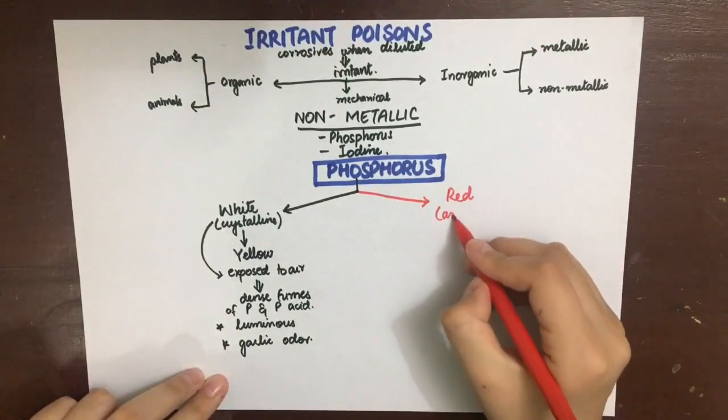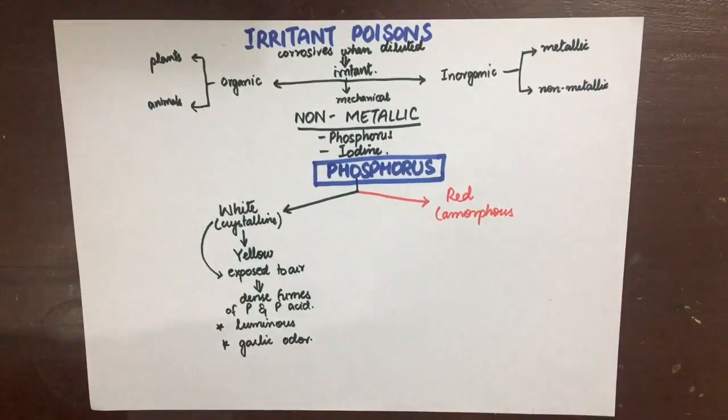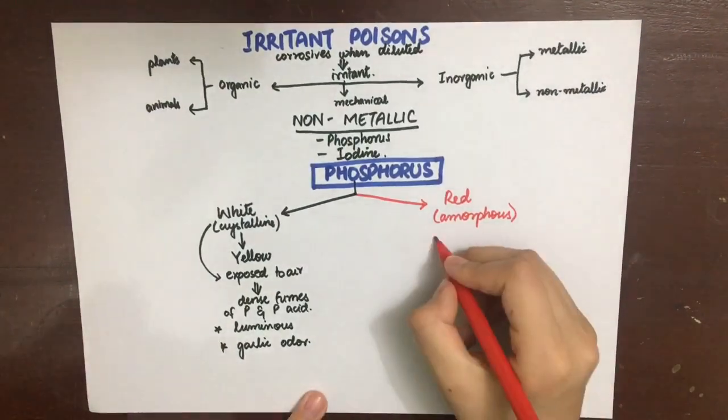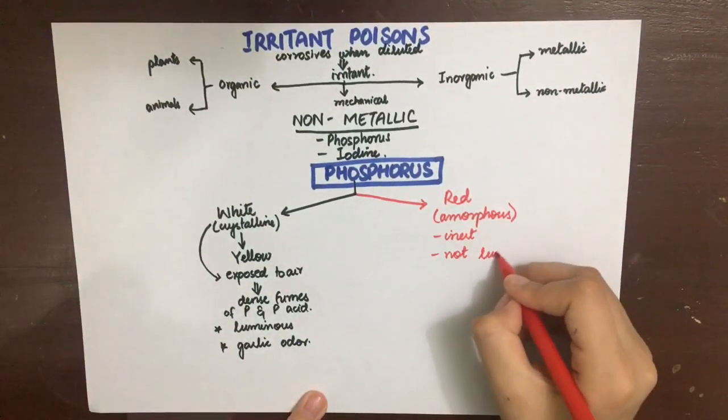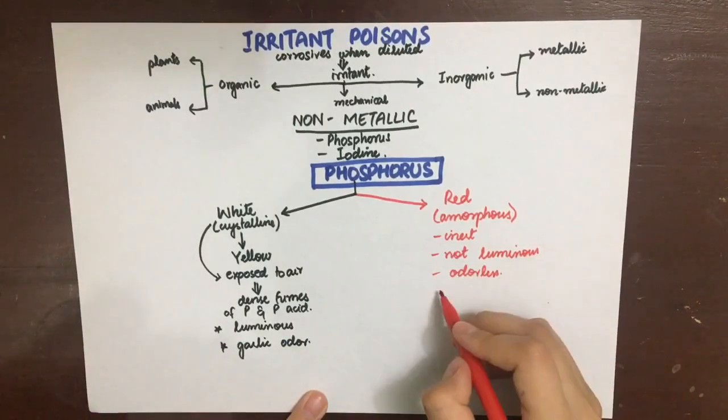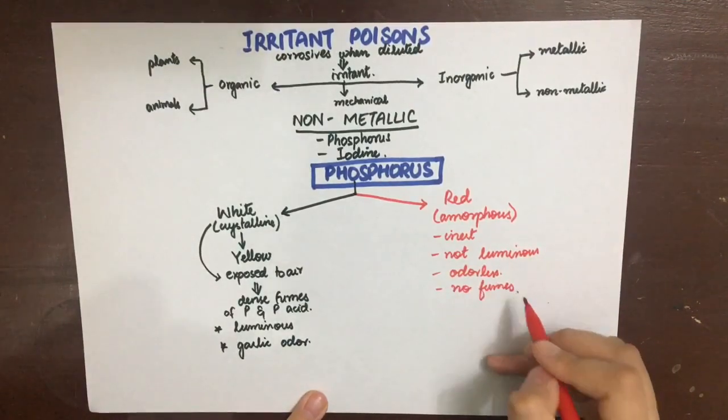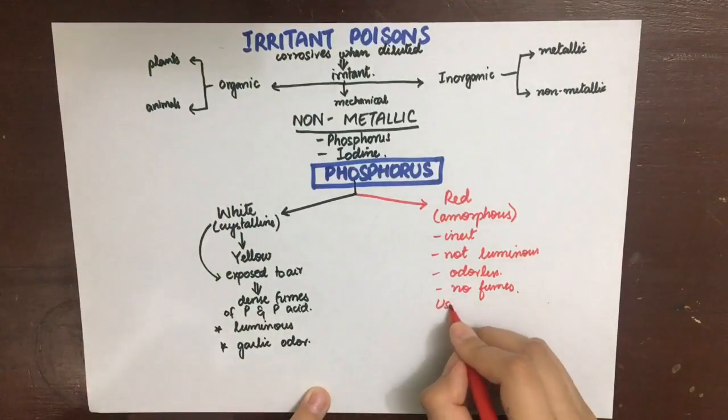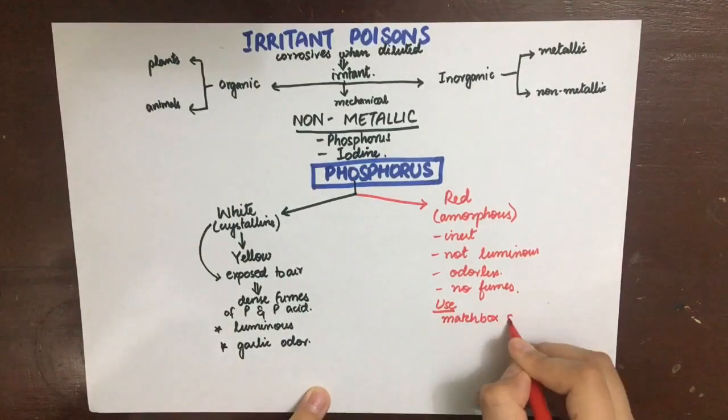It forms dense fumes of phosphorus or phosphoric acid. They are luminous, pale yellow in color, and have a garlic odor. The second form is red or amorphous phosphorus. It is inert unlike the white form, not luminous, odorless, produces no fumes, and is used on matchbox sides mixed with powdered glass.